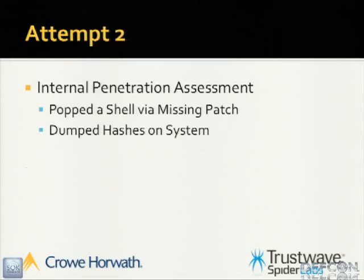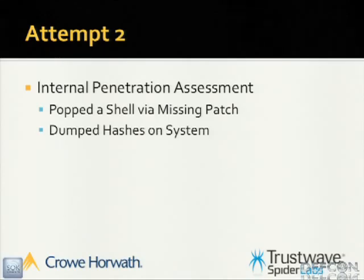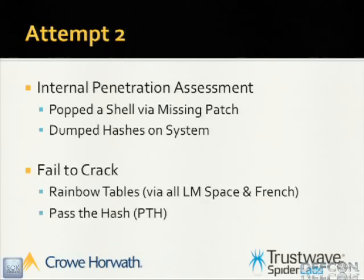Fast forward to my next pen test - a week-long network engagement. I pop a shell on a system, get my Meterpreter, dump the hashes using the HashDump script which extracts through registry reading. Again I have an LM and NTLM. Try to crack the LM - can't. Since I'm still on the network, I take that NTLM hash and try to pass it back to the original system I extracted it from - it doesn't work either. At this point I'm thinking it's got to be the tools.